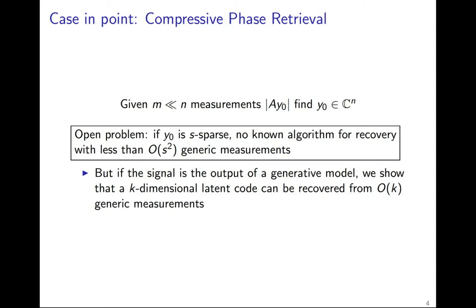In spite of this, we show that if this signal is the output of a generative model, a k-dimensional latent code can be recovered from order k generic measurements.